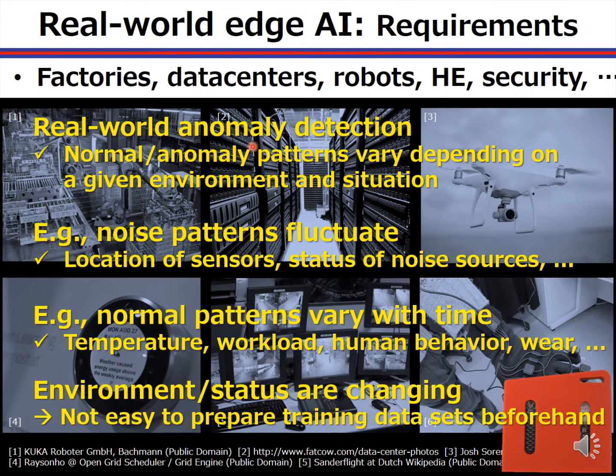In real-world anomaly detection, the issue is that normal or anomaly patterns vary depending on the given environment and situation. In real environments, noise patterns fluctuate depending on location of sensors, status of noise sources, and so on. Also, normal patterns vary with time because of temperature, workload, human behavior, and so on. So environment and status are changing.